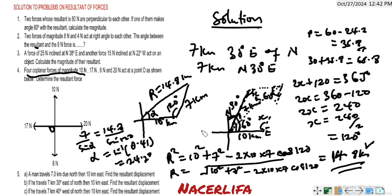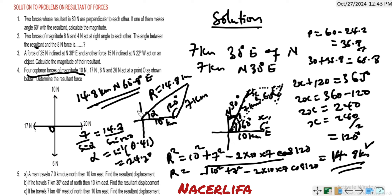The resultant displacement is 14.8 kilometers, north 65.8 degrees east. You can follow from this and solve number 5c — put the answer in the comment section. If you have enjoyed this, subscribe for more updates, share with your friends. This is Nest Elepha Academy and we are signing out.